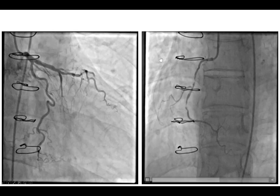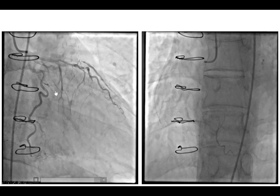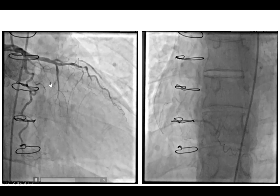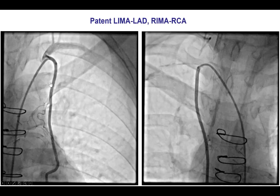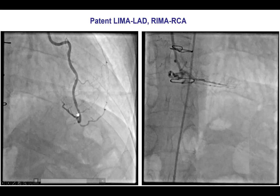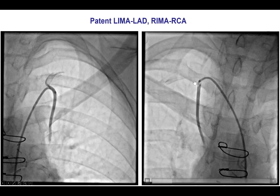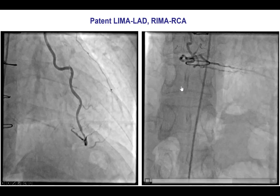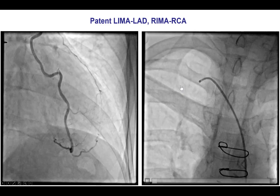Diagnostic angiography showed occlusion of the LAD, the obtuse marginal, and RAMUS branch. There was also occlusion of the right coronary artery. However, both the LIMA to LAD and the RIMA to the right coronary artery were both patent without significant lesions.